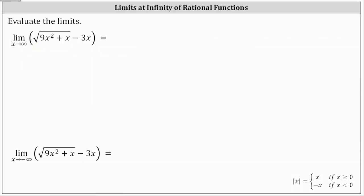First, notice how as X approaches infinity, the square root of the quantity nine X squared plus X approaches infinity. And then we have minus three X, which also approaches infinity as X approaches infinity. So right now the limit is in the form of infinity minus infinity, which is not equal to zero. This is an indeterminate form, so we'll have to perform some algebra on the function to hopefully then determine the limit.